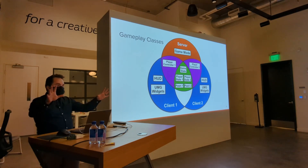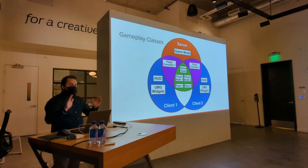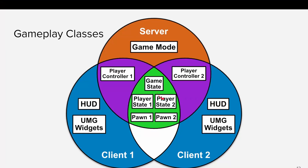That was a big information dump. To summarize the replication graph: game mode is only on the server — not replicated to clients. Player controllers are synced between the server and their individual clients but not between different clients. Player states, pawns, and game state are all replicated to everyone. HUD and UMG widgets are not replicated — only you know about those. There are also variables to configure relevancy for things like not needing to know someone's health across the map.